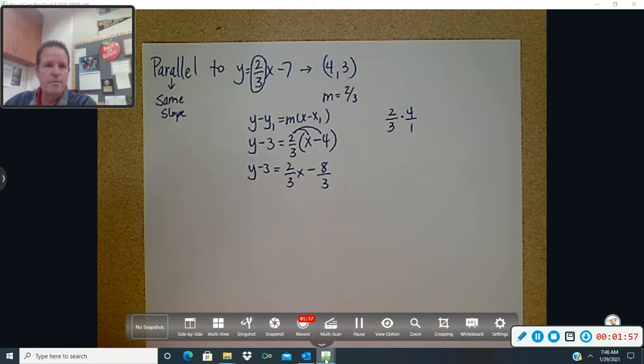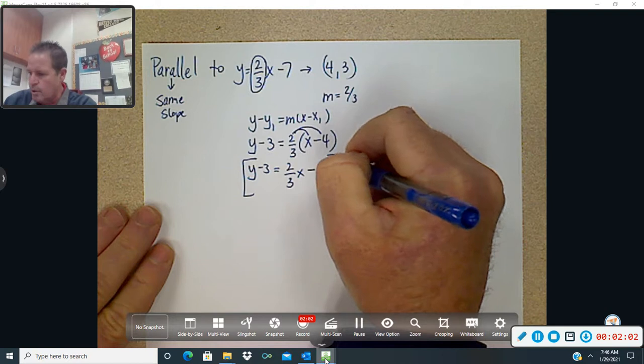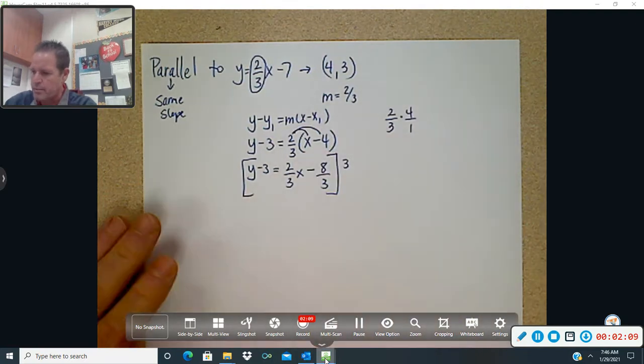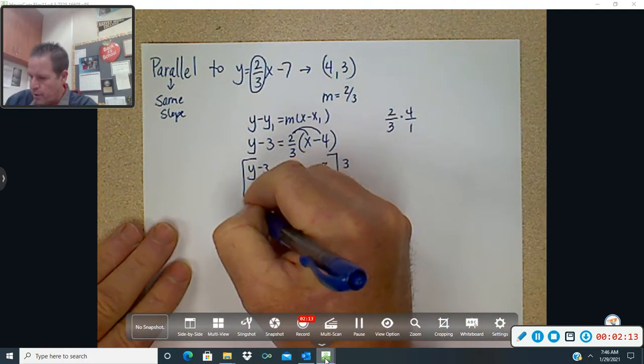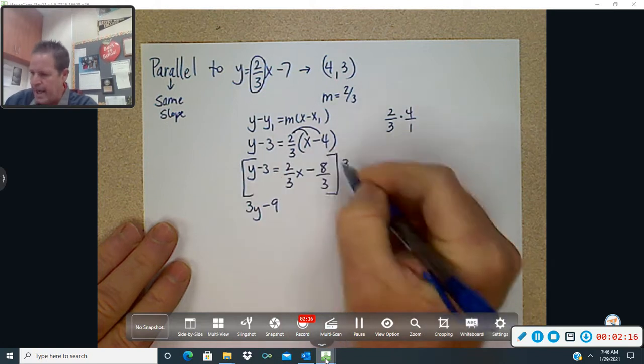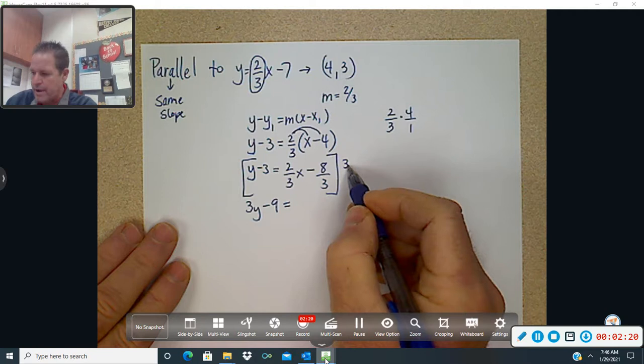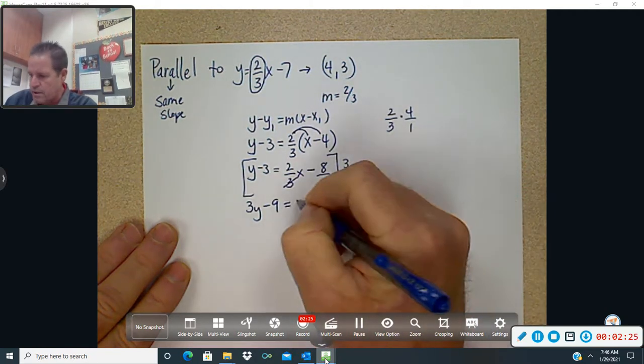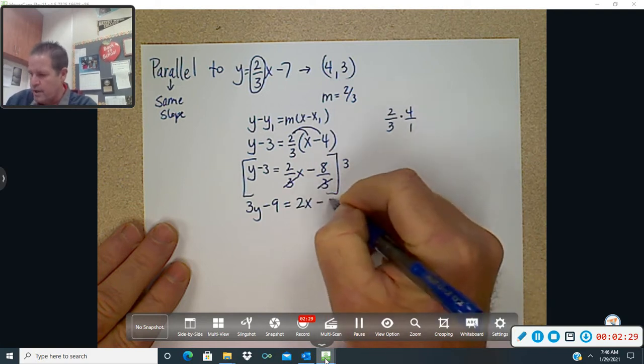Now, we said from here we really not want to work with the fractions. We'd rather not. So let's multiply everything by 3. Okay, now if you do that, every single part gets multiplied by 3. So that's why we have 3y, that's why we have 3 times 3 is 9. Then the 3 is going to cancel here to give us 2x. The 3 is going to cancel here to give us minus 8.